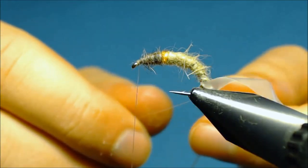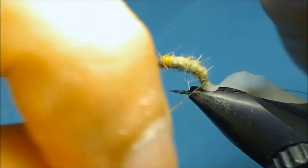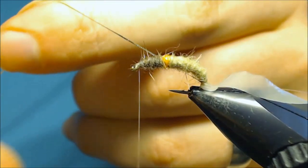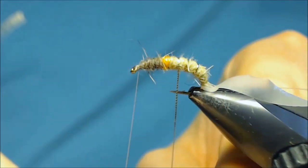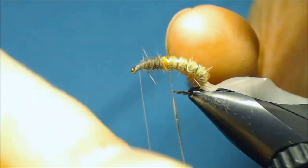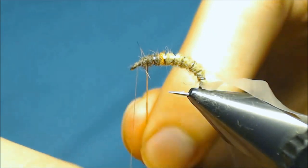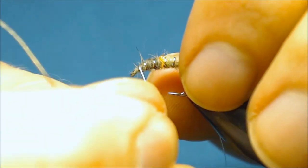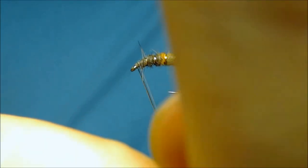And now we can spiral up the under rib, just making open spirals up the fly through the body, making sure that it is where you want it, and then through the thorax as well. And then when we reach the eye, tie it off.